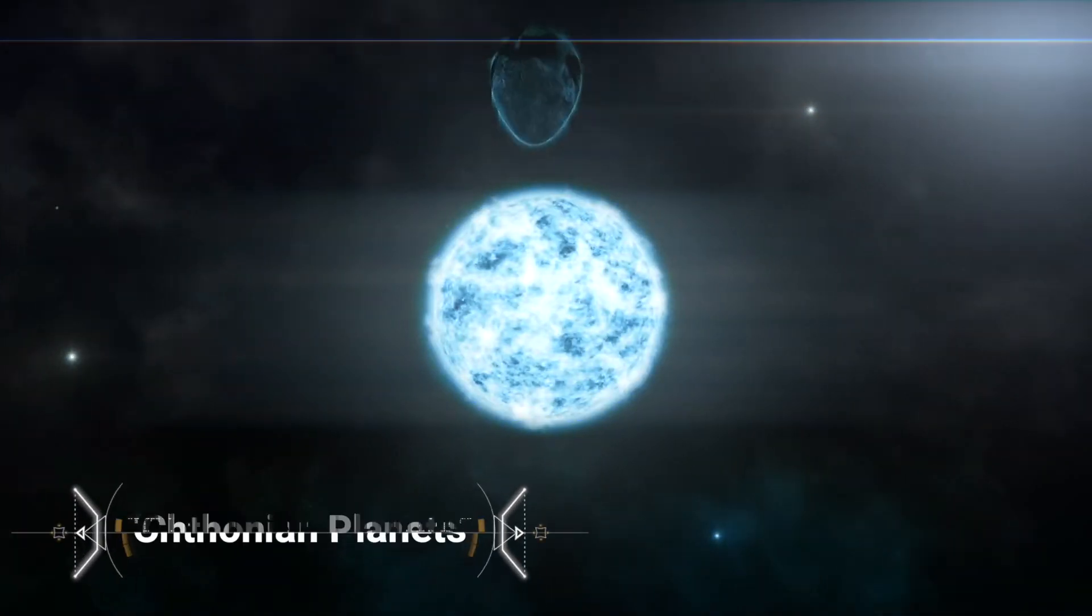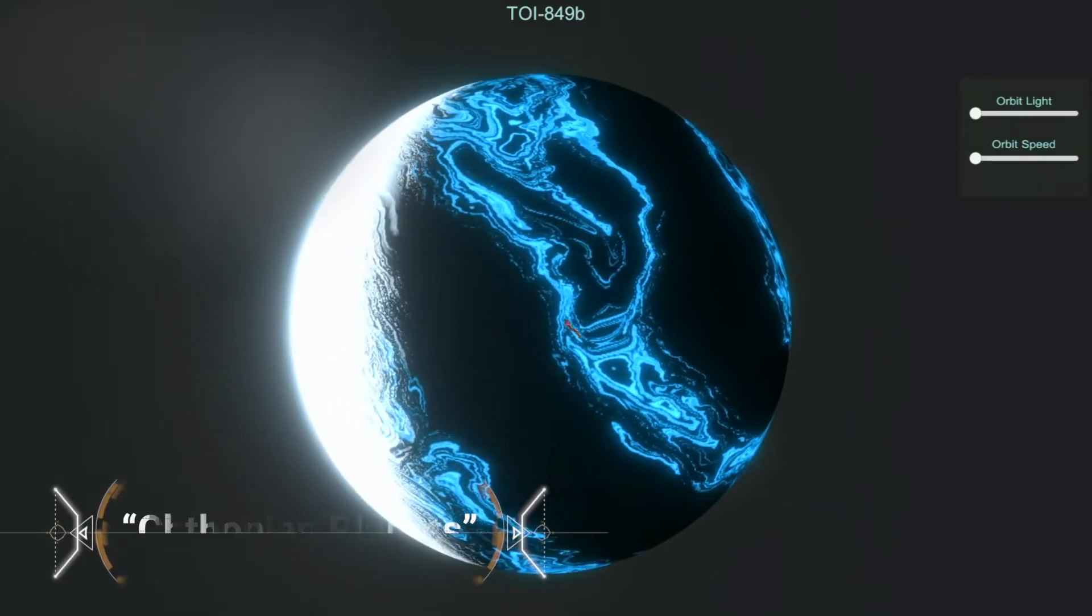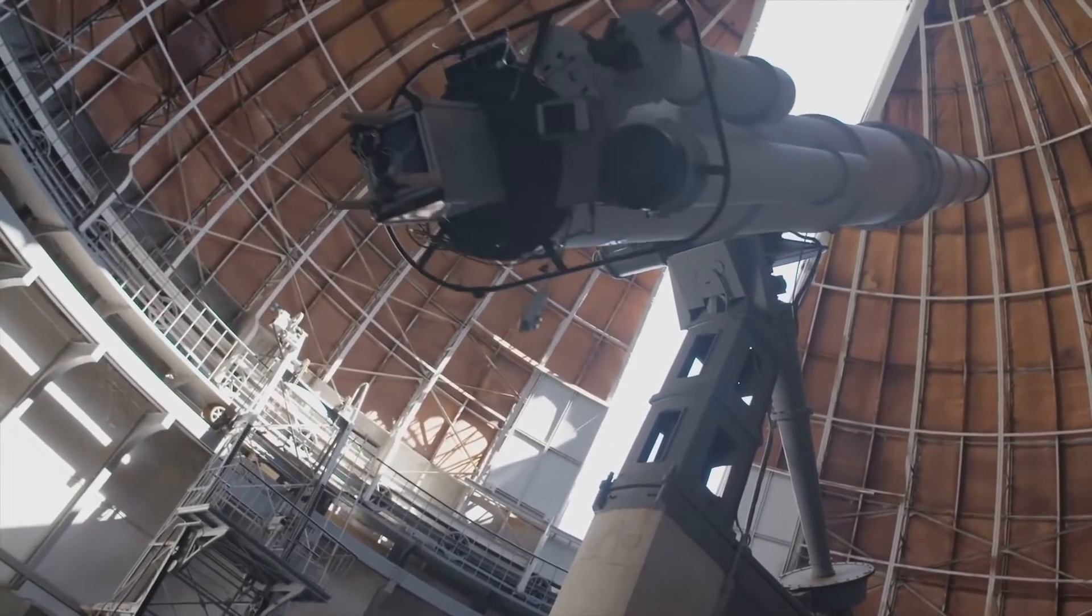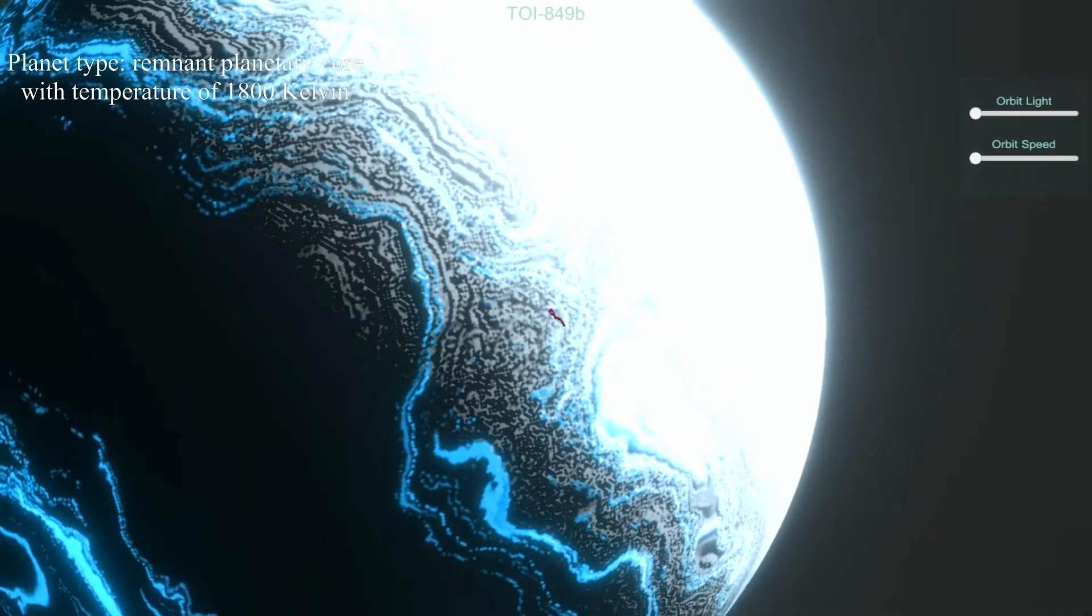Members of this theoretical class of planet are called Chthonian planets. As of yet, there is only one probable candidate with this new classification, the recently discovered TOI 849b. This planet is roughly Neptune-sized, nearly three and a half Earths across.